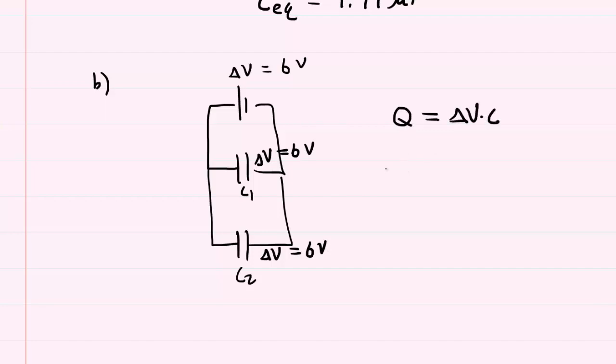So we can go back to the equation that we derived earlier in which Q was equal to delta V times C. And we can calculate Q1 by taking the 6 volts and multiplying it by the 2.5 microfarads that we could assign for C1. And when we multiply these, we get 15 microcoulombs.